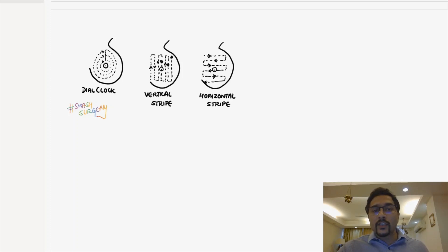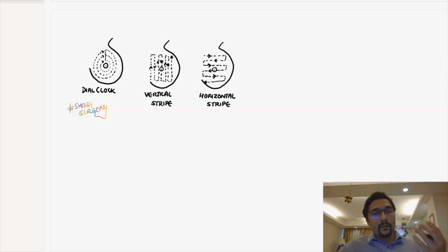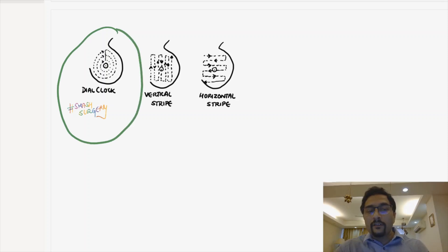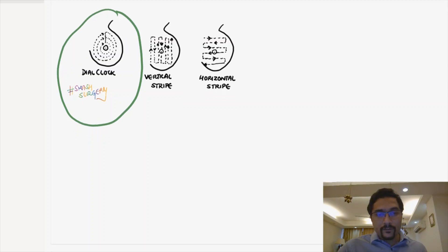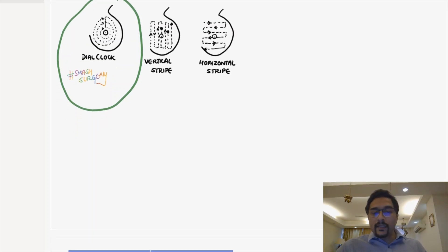Another question asked in MCQ exams: what is the best way to carry out a breast examination? The correct answer is the dial clock method, which is why we denote the location of the lump in terms of the position of a clock. This is our examination.